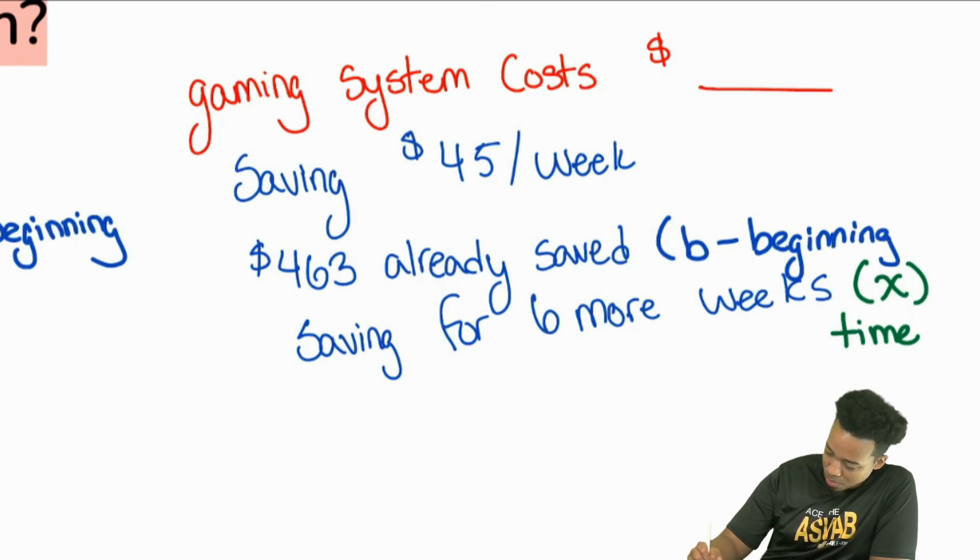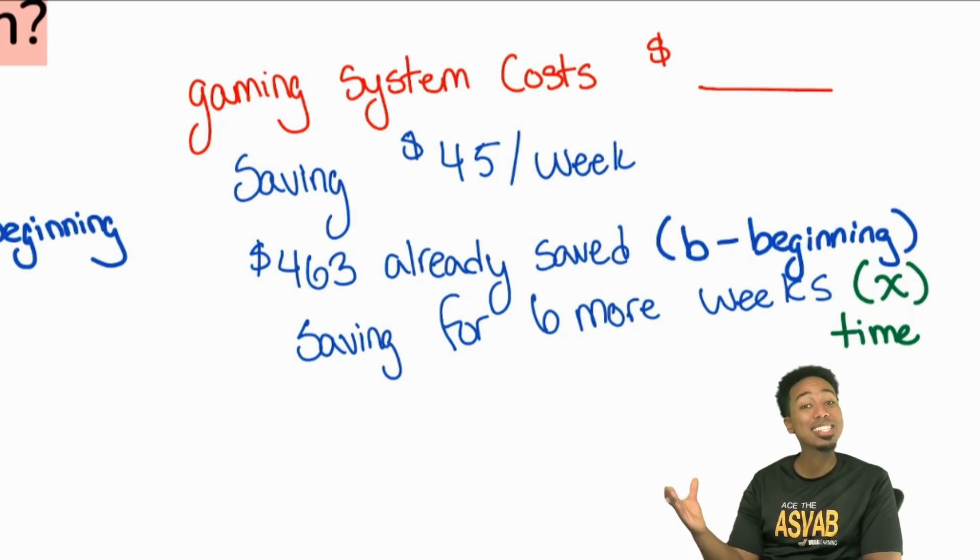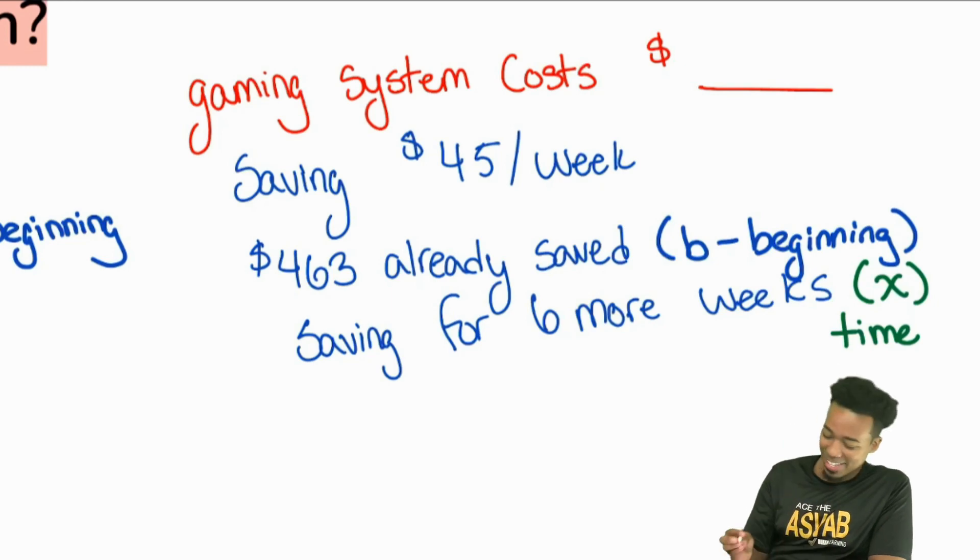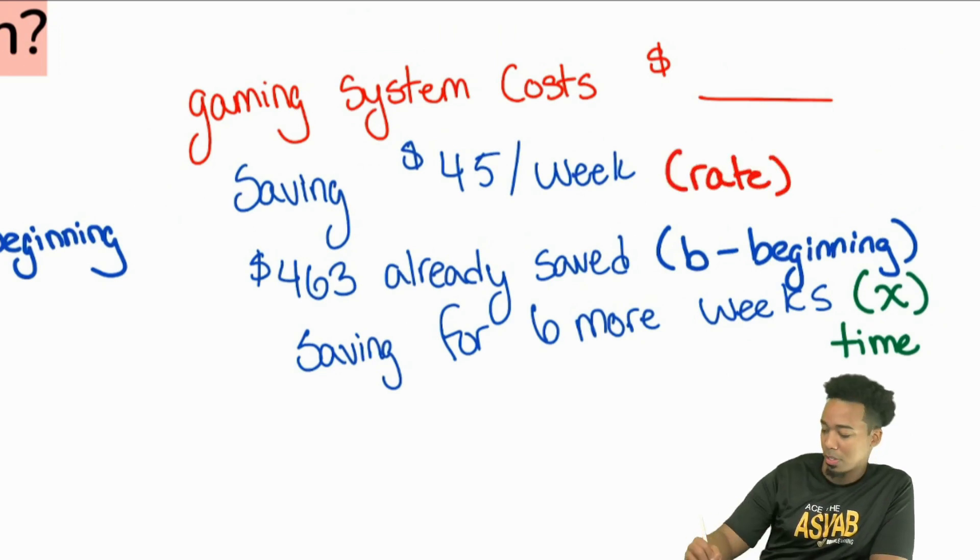All right. Next up, what do we have next? Saving $45 per week. What's that going to be, everybody? What does that sound like to you? Per week. $45 per week. Mixing two units. Money per week. Yeah. That's your rate. That is your rate. That is what's consistently happening. Every week, $45. Every week, $45. Exactly. $45 a week. That is our rate. So it's your M.